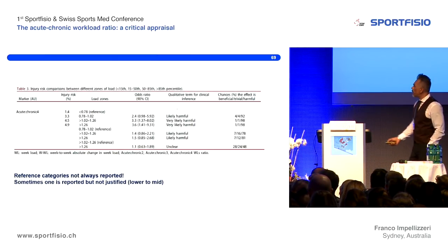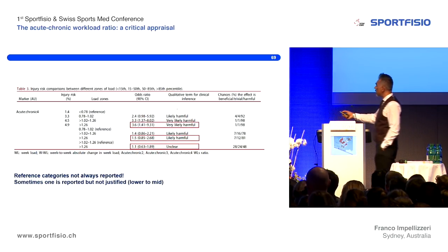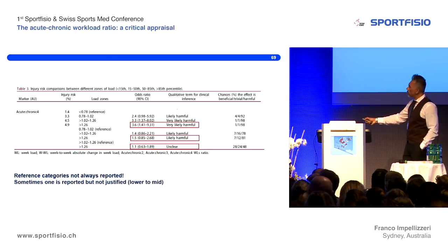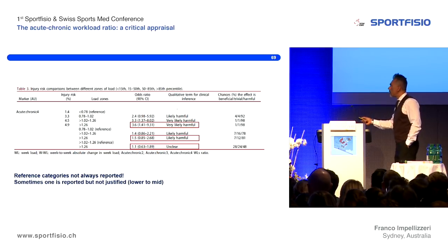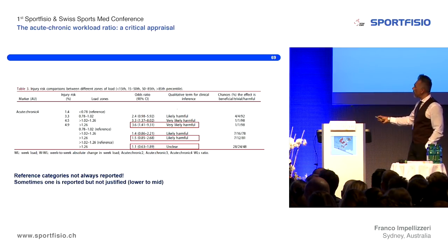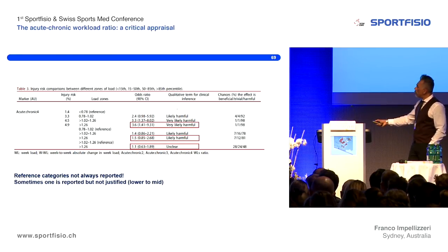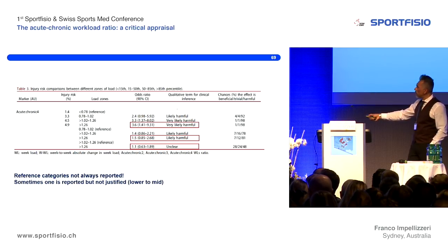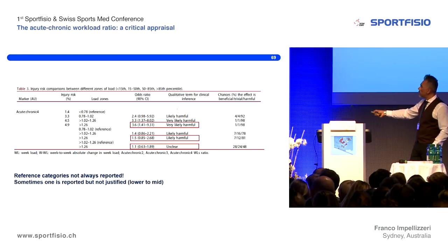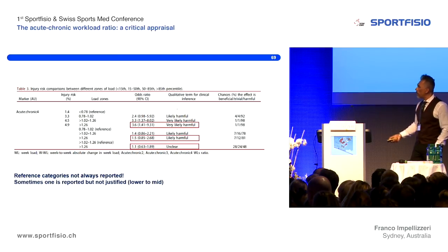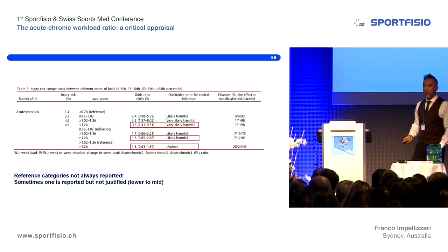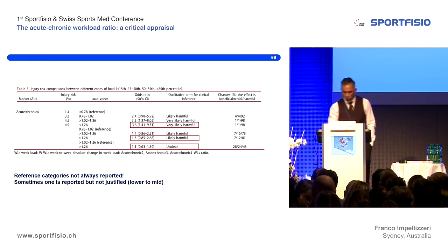The reference category matters greatly. In a study by Frankini using the Magnitude-Based Inference approach, using the first range as reference gives a 'very likely harmful' result. If you change to the second category as reference, 'very likely' becomes 'likely.' Use yet another reference category and it becomes 'unclear.' So results can shift from 'very substantial' to 'unclear' just by changing the reference category. This is a real statistical issue, and sometimes studies don't even report which reference category was used.